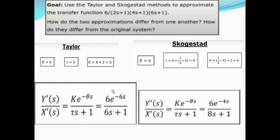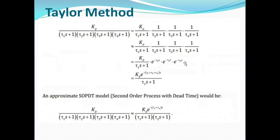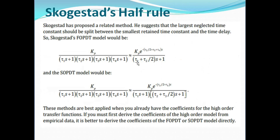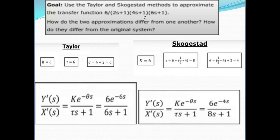So the overall first order transfer function using Taylor's method, which shows the same behavior as the higher order system, will be: 6 divided by (6s+1) multiplied by e raised to minus 6s. This is the first order approximation using Taylor's method. Using Skogestad's half rule, K = 6, and tau = τ₁ + τ₂/2 = 6 + 4/2 = 8, so the denominator becomes (8s+1).